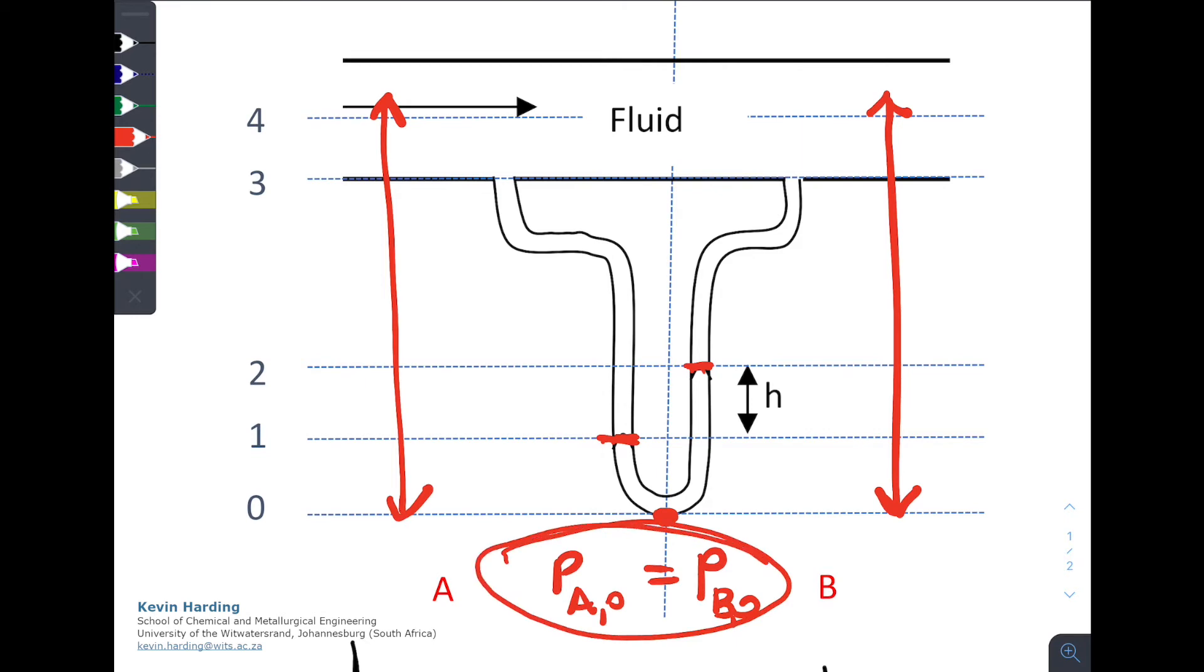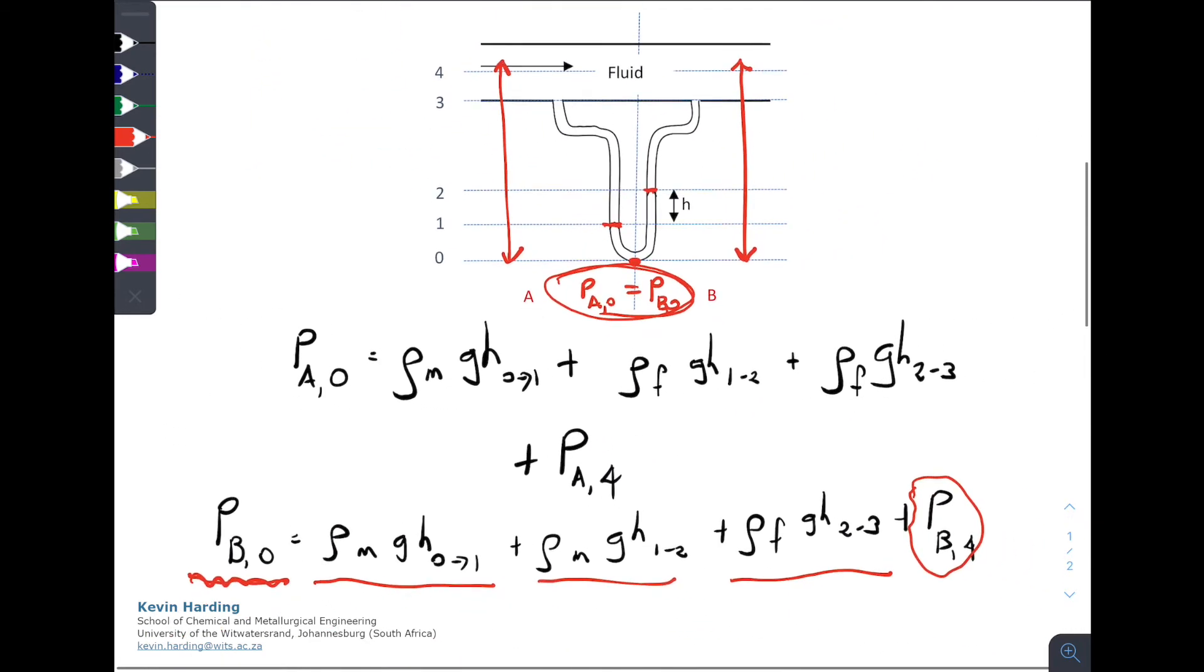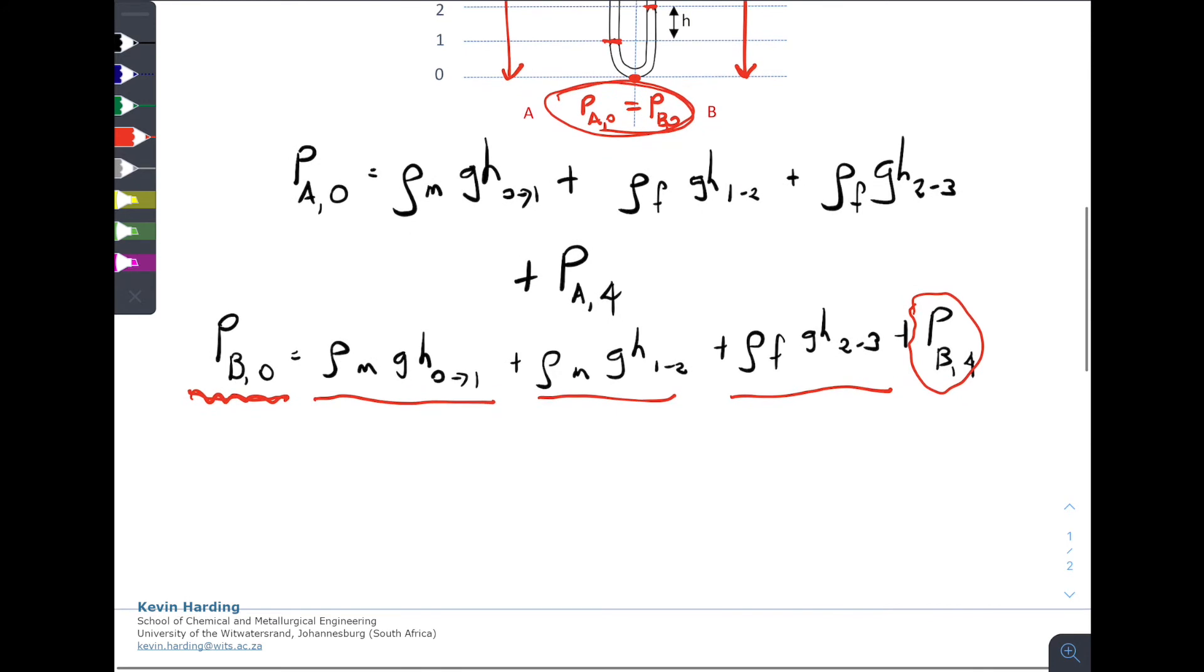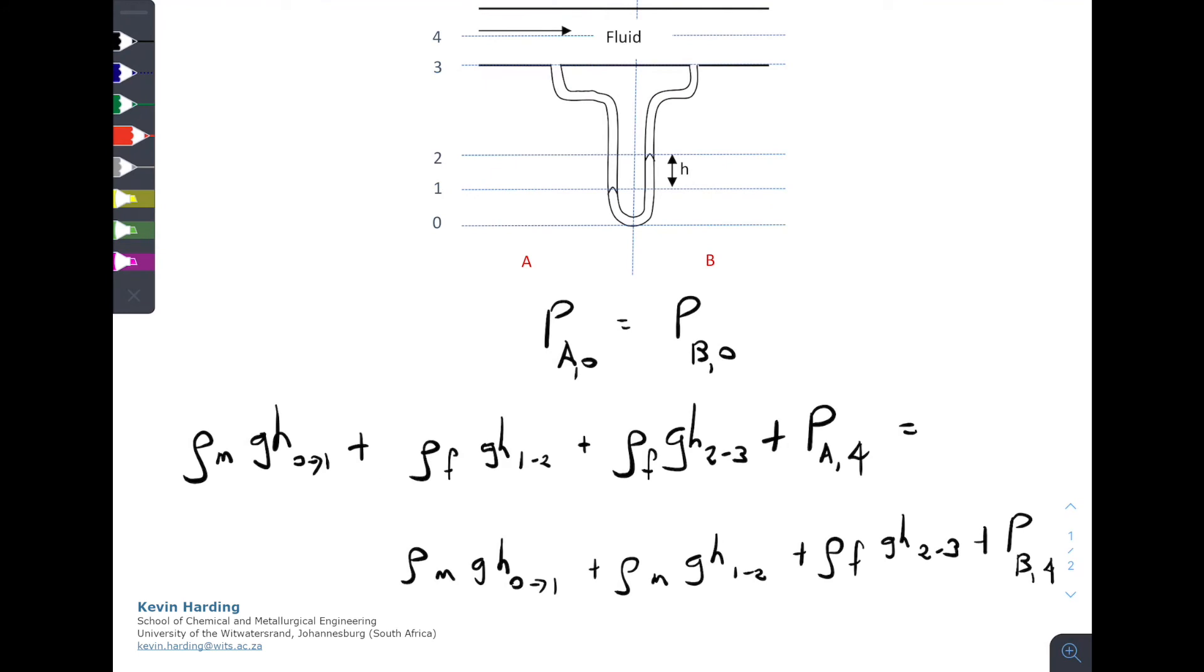So if we're now saying that the pressure of A and B at the bottom is the same, we can take these two equations that we've just got and we can rewrite them as pressure A0 is equal to pressure B0, and we can take the entire system on the right, or the entire right-hand side of A, and we can make it equal to the entire system of PB0 on the right equal to it. So having written PA0 is equal to PB0 and written all the terms down in front of us, we can now have a look again at the diagram and see what is common.